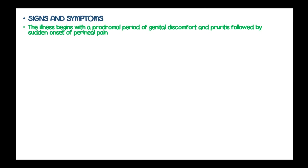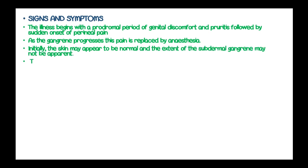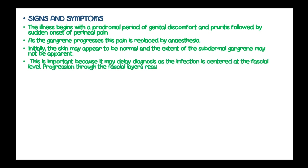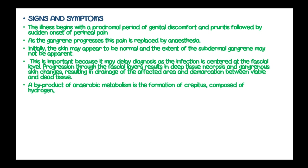Fournier's gangrene begins with a prodromal period of genital discomfort and pruritus, followed by sudden onset of perineal pain. As the gangrene progresses, this pain is replaced by anesthesia due to destruction of the nerve endings of the skin. Initially the skin appears normal and the extent of subdermal damage may not be apparent, which may delay diagnosis as the infection is centered at the fascial level. Progression through the fascial layers results in deep tissue necrosis and gangrenous skin changes, resulting in drainage of the affected area and demarcation between viable and dead tissue.